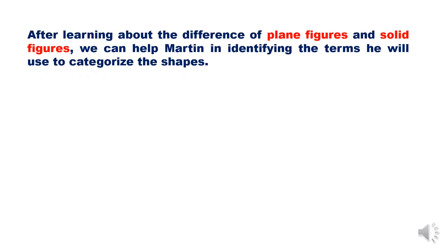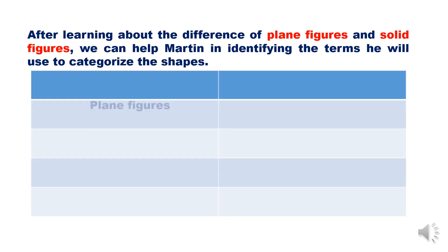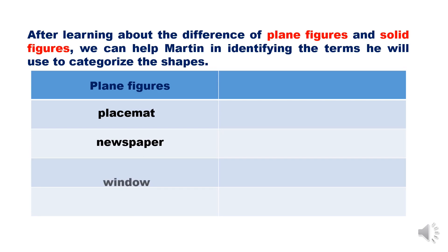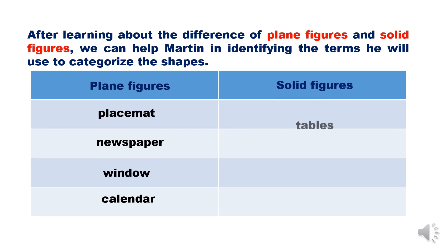After learning about the differences between plane figures and solid figures, we can help Martin identify the terms used to categorize shapes in a room. The plane figures include the place mat, newspaper, window, and calendar. The solid figures include the table, TV, and vase.